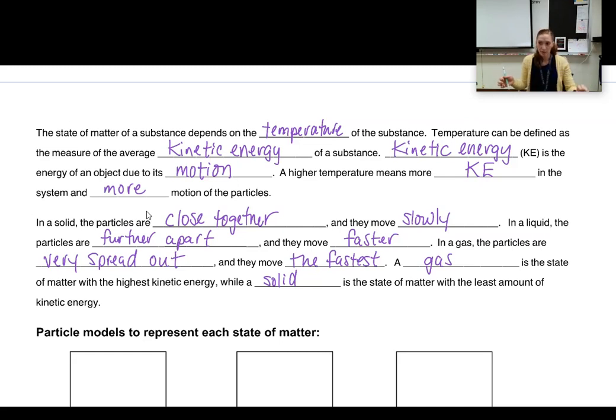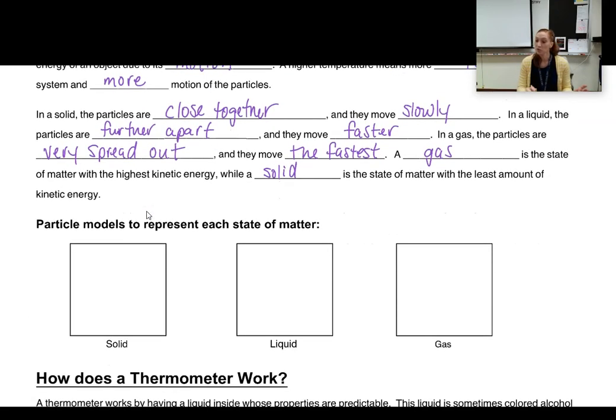So, we've got slow moving, close together particles for a solid. Further apart, slightly faster moving particles for a liquid. And then for a gas, they're going to be spread apart and moving the fastest. So, let's show that in our particle models here.